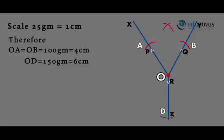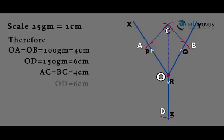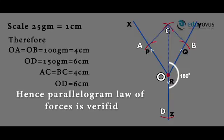Now construct a parallelogram by drawing two more arcs from A and B so that they meet at point C. Here, AC is equal to BC, which is 4 centimeters. Join OC and measure its length. Here OC is equal to OD, which is 6 centimeters, and angle COD is equal to 180 degrees. Hence, the parallelogram law of forces is verified.